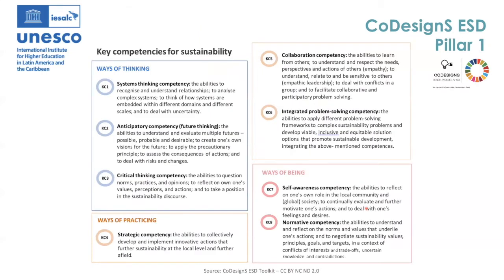On this slide, we can see how the different key competencies for sustainability that are relevant to all SDGs, presented in the UNESCO report in 2017 and more recently in the ESD guidelines published by the QAA and Advanced HE, have been classified on the ways of thinking, ways of practicing, and ways of being. Among these competencies, we have system thinking competency, which refers to the abilities to recognise and understand relationships.